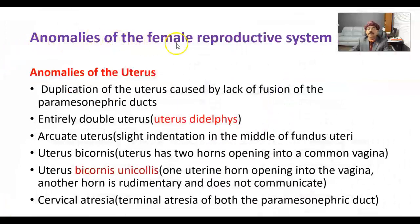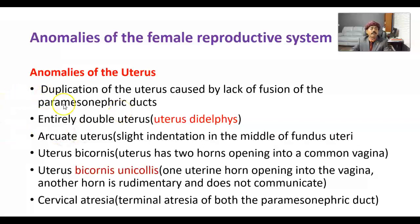Anomalies of the female reproductive system: anomalies of the uterus. Duplication of the uterus is caused by lack of fusion of the paramesonephric duct. The paramesonephric duct has an unfused part and a fused part — the unfused part forms the fallopian tube, and the fused part forms the uterus and the upper part of the vagina, including the fornices of the vagina.